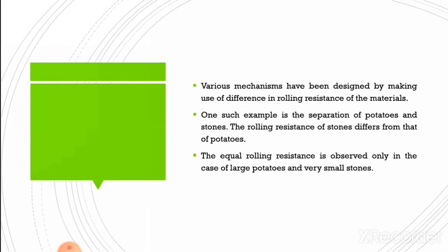Various mechanisms have been designed making use of differences in rolling resistance of materials. One such example is the separation of potatoes and stones. The rolling resistance of stones differs from that of potatoes, so this rolling resistance property of agricultural produce is used to design the potato separator. Equal rolling resistance is observed only in the case of large potatoes and very small stones.